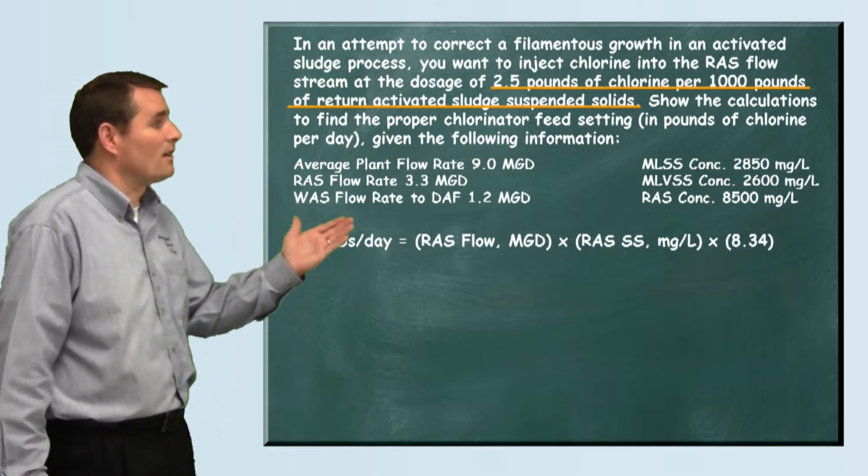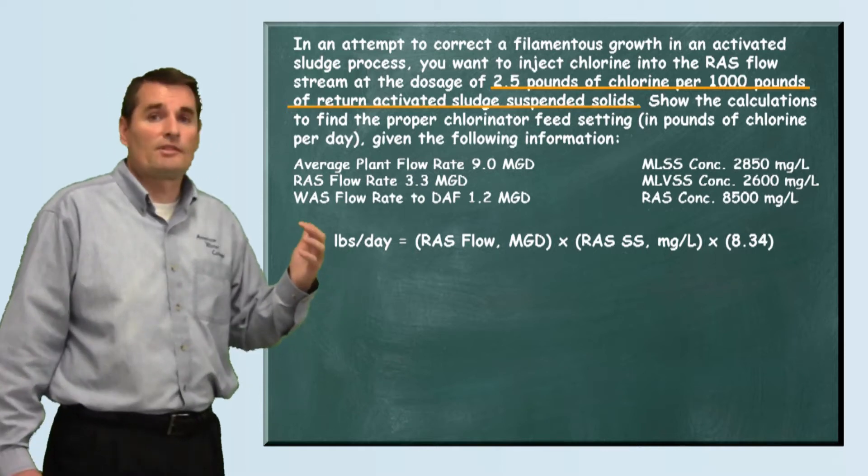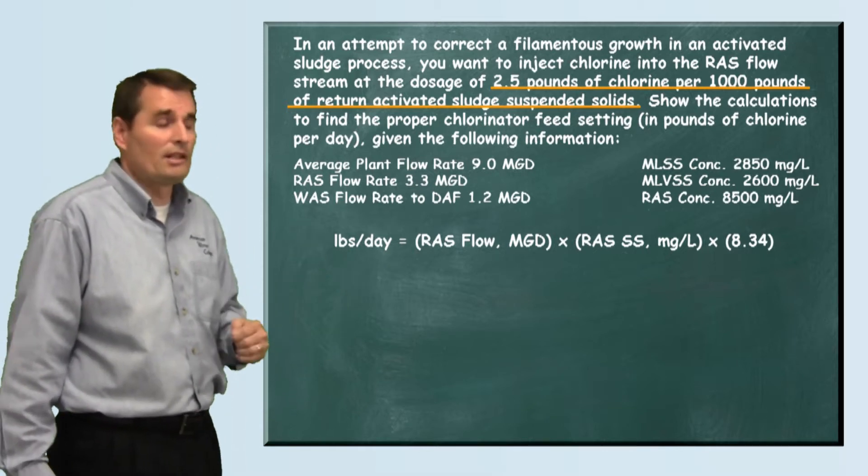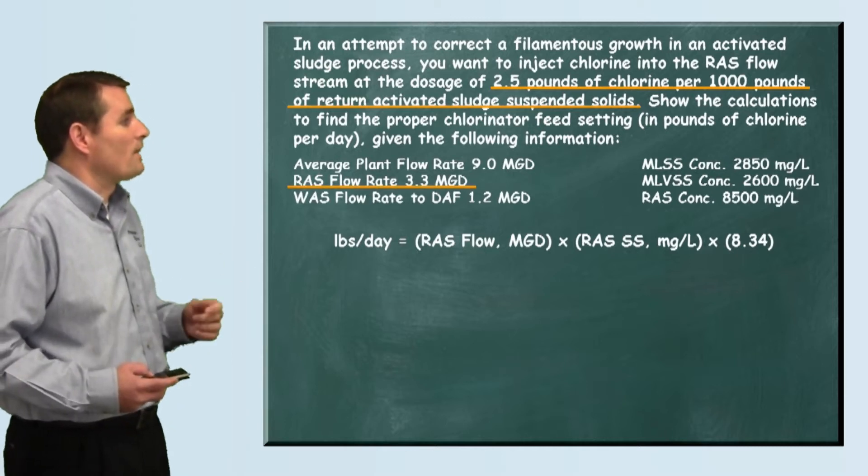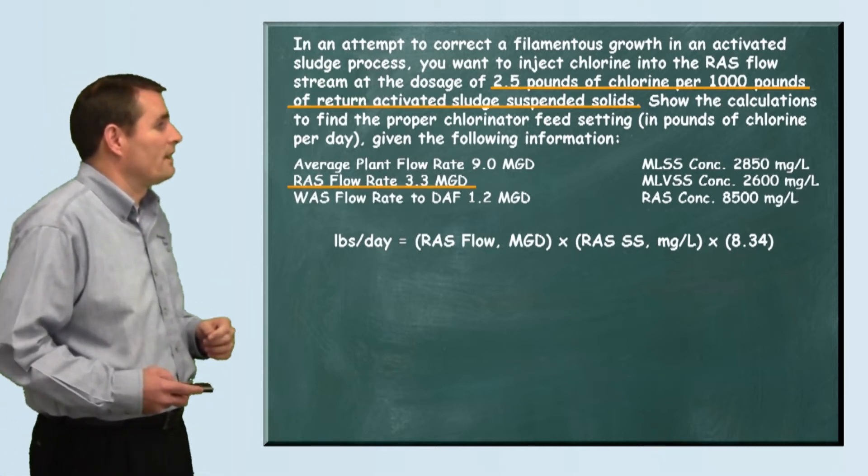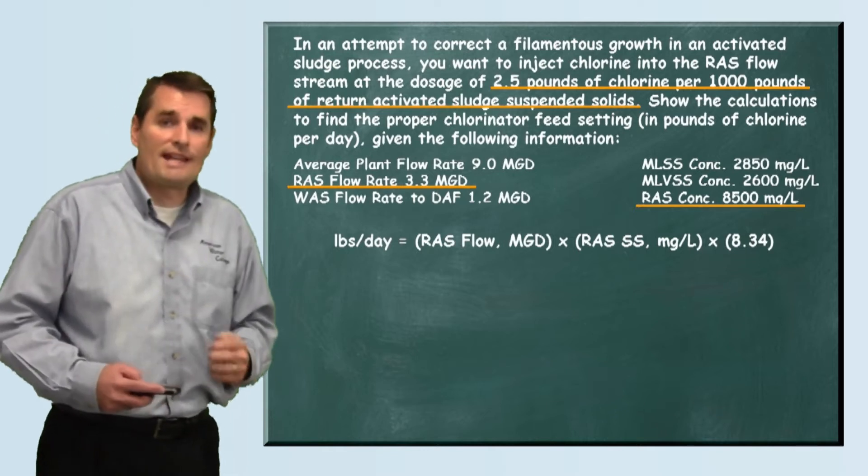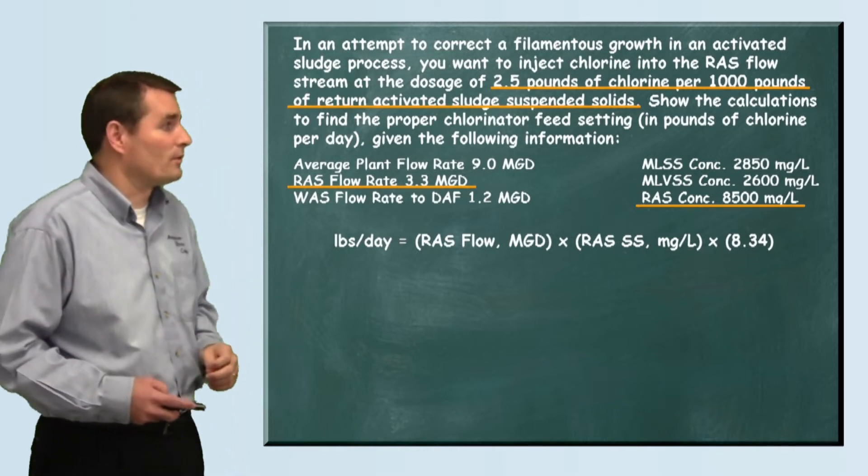We calculate pounds per day by taking our RAS flow times our RAS concentration in milligrams per liter times 8.34. We'll notice the RAS flow is 3.3 million gallons per day, and our RAS concentration is 8,500 milligrams per liter.